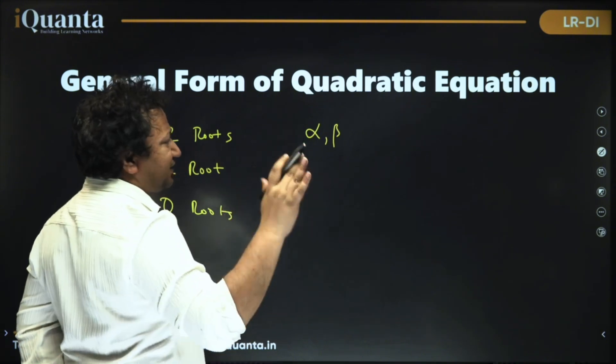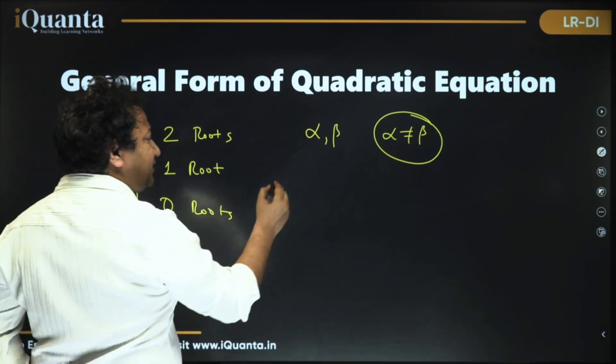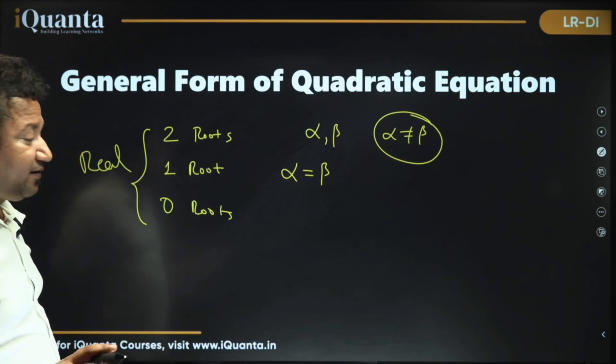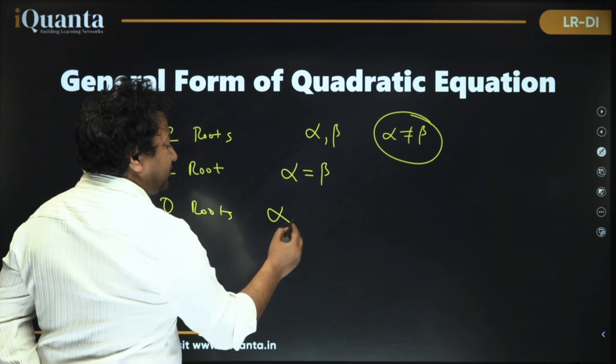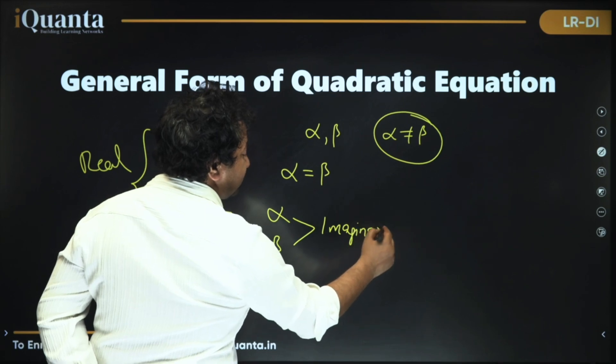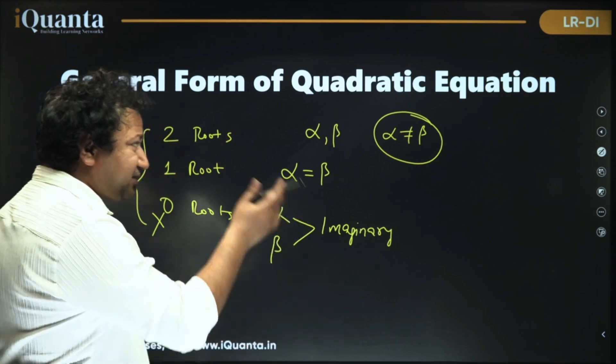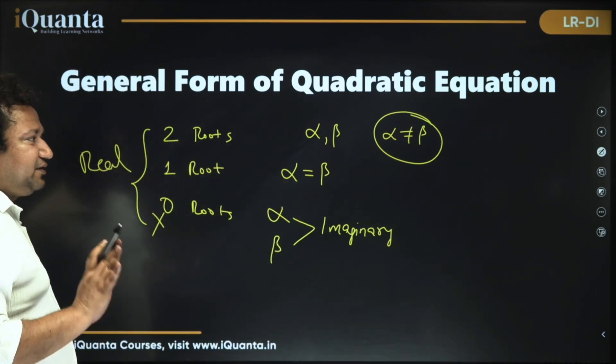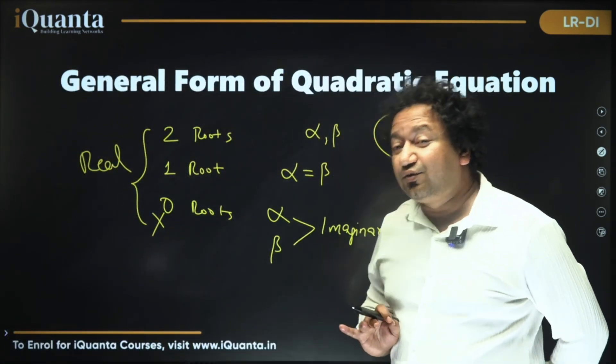If it's one root we can also interpret that both the roots are equal. Alpha is equal to beta. If zero roots that means zero real roots are there. In this case also we'll be having two roots but those two roots will actually be imaginary. By the way imaginary roots, imaginary numbers not in syllabus of CAT so we will not learn about this. In the real algebra class we'll discuss more about this but right now you understand this is the quadratic equation, these are the roots and now the agenda of this video is to understand how to find the roots quickly.